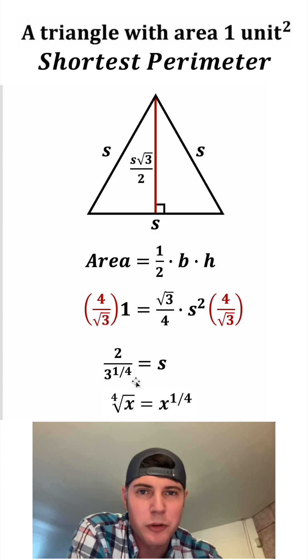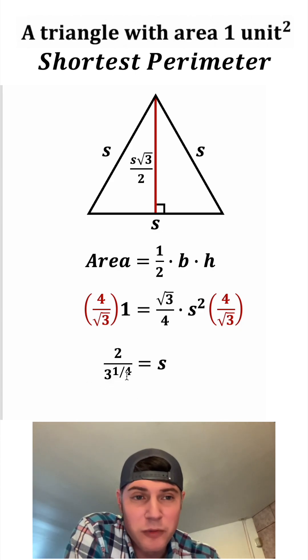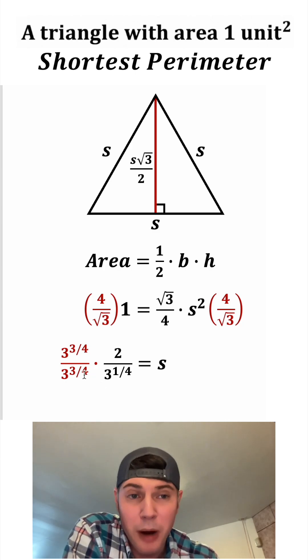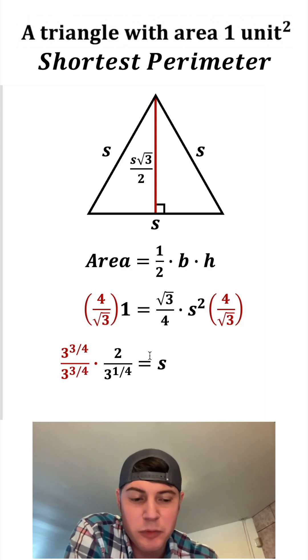The fourth root of X is equal to X to the one fourth power. So we can rewrite the fourth root of three as three to the one fourth power. So now to get rid of this one fourth power, if we multiply top and bottom by three to the three fourths power, on bottom, we're going to add these exponents. So three fourths plus one fourth ends up being just one. So this bottom becomes three to the one.